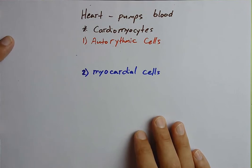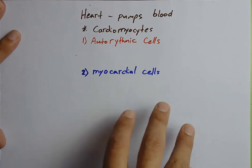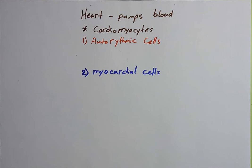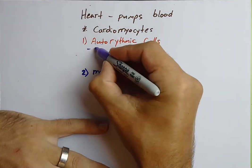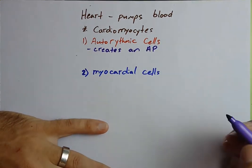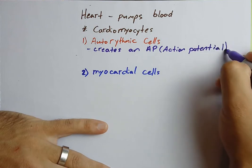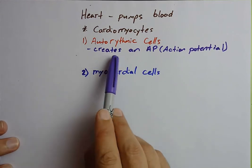So how does that differ in cardiac muscle? Here's how it differs: skeletal muscle required an action potential from the brain, but the heart creates its own action potential. And where does that occur? It occurs right here in the auto-rhythmic cell. The auto-rhythmic cell is capable of creating its own action potential automatically. It actually has its own intrinsic mechanisms for creating an action potential — and that's going to be a whole different lecture.